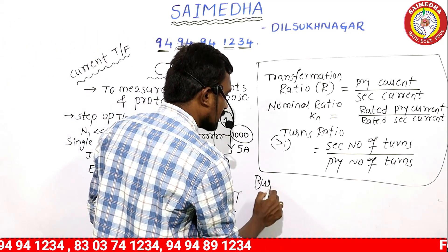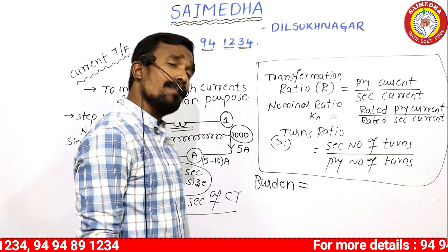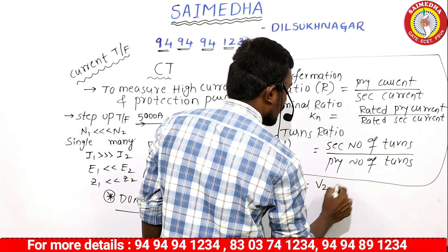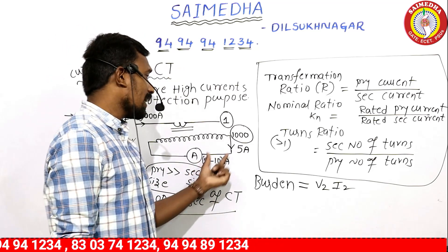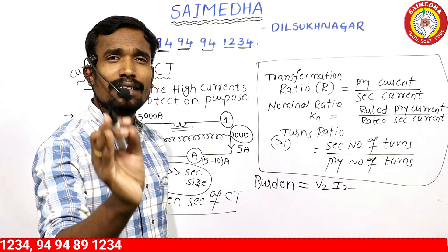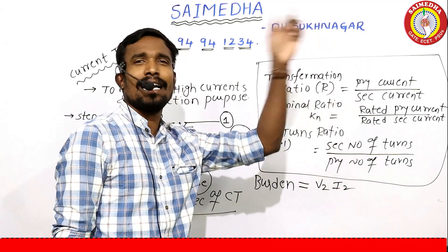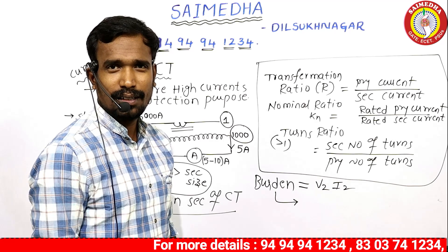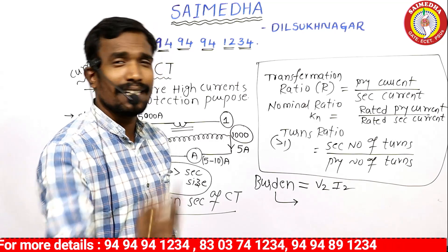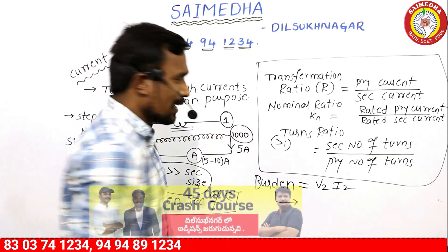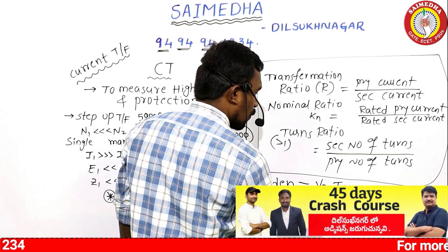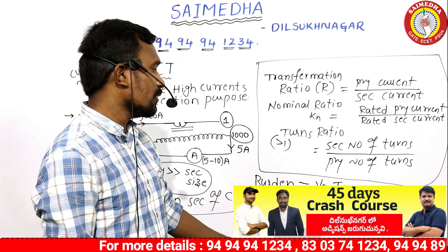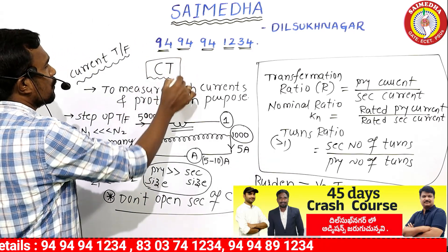Next is the burden on the transformer. The burden on an instrument transformer equals secondary voltage multiplied by secondary current. This applies to both CT and PT. The units of burden are volt-amperes — not kilowatts, not megawatts, not kVA — just volt-amperes.